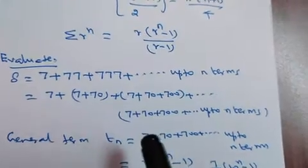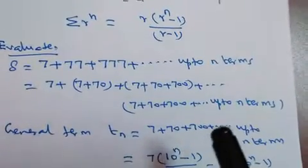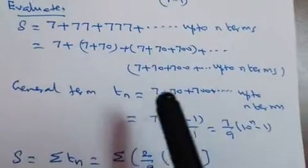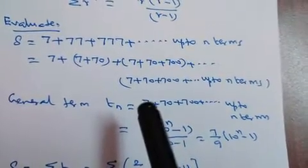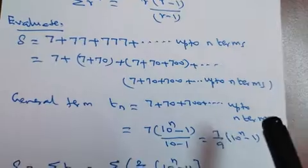What will be tn? 7 plus 70 plus 700 plus and so on up to n terms. It is a GP. What is the first term? 7. What is the common ratio? 10. How many terms are there? n terms.